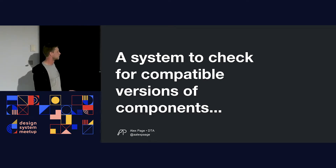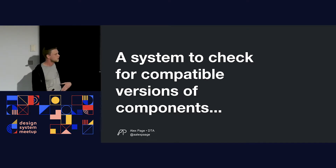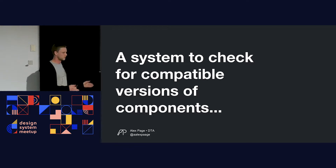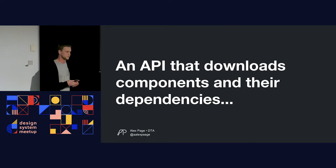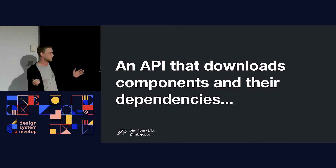Another interesting thing we had to name was a system to check for compatible versions of components — to make sure when you install our core component, the button version and core version work together. This tool also does things like compile CSS and minify JavaScript. So what starts as 'component version check' evolves into something more. Similarly, an API that downloads components and their dependencies could be called 'the download page' for a user, but for a developer they're building an API, taking calls, and bundling files — so 'download page GitHub repository' just doesn't fit.